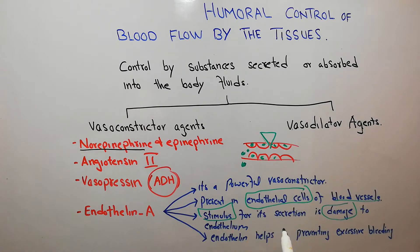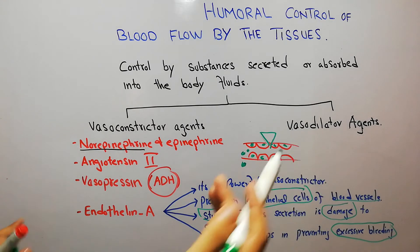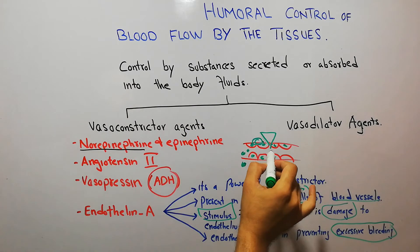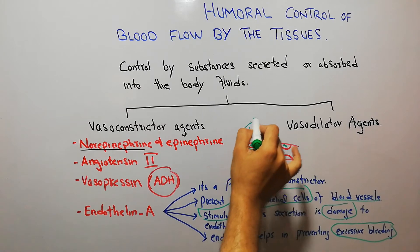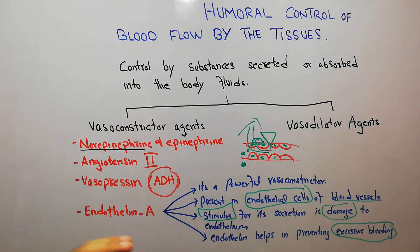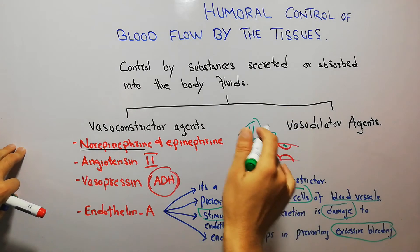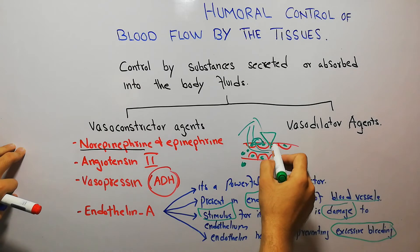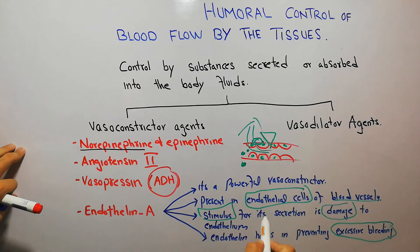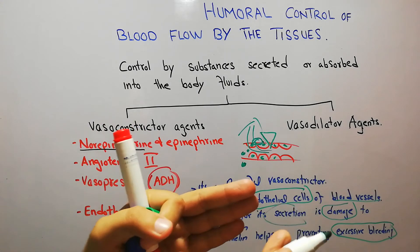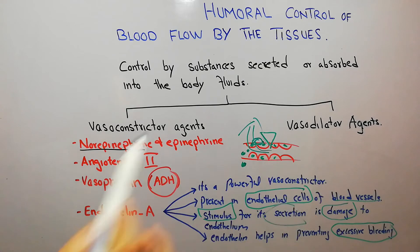Once endothelin is secreted, it helps in preventing bleeding. The trauma or substances that damage the endothelium also damage the wall of the blood vessel, leading to bleeding — blood exits through the pore caused by the trauma, pressure, stress, or chemical. This same trauma or stress that damages the endothelium simultaneously causes secretion of endothelin, which then helps in vasoconstriction of the blood vessel, thereby preventing bleeding from the damaged vessels.